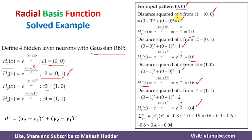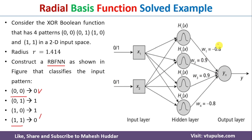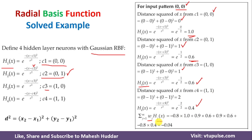We have now calculated the output for each hidden layer neuron. Next, we calculate the output at the output layer neuron, which is the weight multiplied by the output of each hidden layer neuron. Looking at the diagram, the weights are initialized randomly as minus 0.8, minus 0.9, 0.9, and minus 0.8. So the output equals (minus 0.8 × 1.0) + (0.9 × 0.6) + (0.9 × 0.6) + (minus 0.8 × 0.4), which gives minus 0.04.